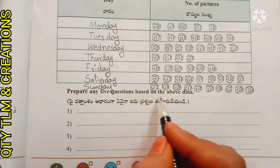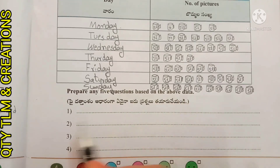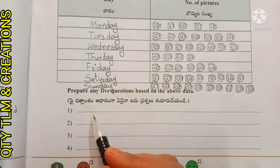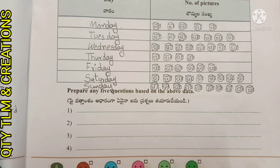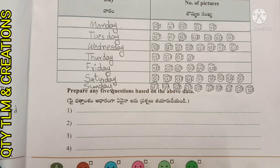Now prepare any five questions based on the above data. First question: how many liters of milk did the milkman sell on weekdays? Second question: on which day did he sell the least liters of milk in a week? Third question: on which day did he sell the most liters of milk on weekdays?